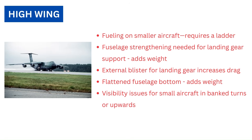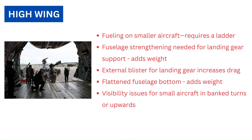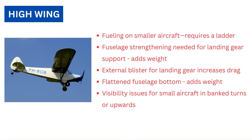As the landing gear is attached to the fuselage, the fuselage must be strengthened to support the landing gear loads, which increases fuselage weight. Also, an external blister is used on such designs to house the landing gear, which increases drag. Flattening the bottom of the fuselage for the purpose of storing cargo also adds weight to the design. On smaller aircraft, high wing design blocks upward visibility and visibility in a banked turn.